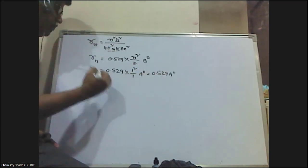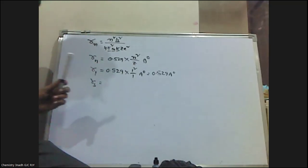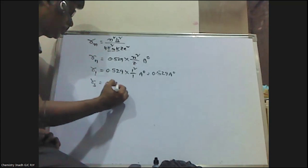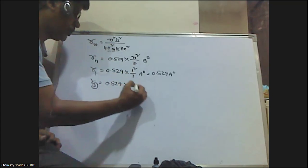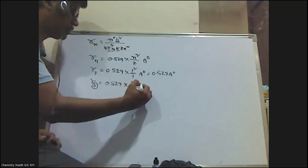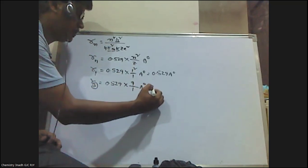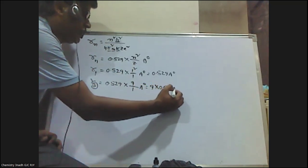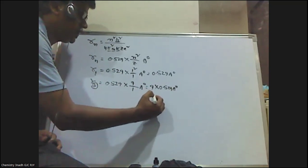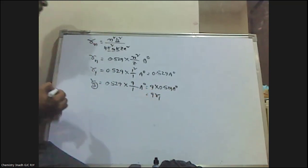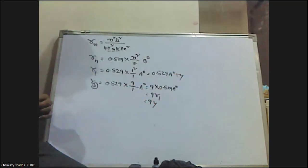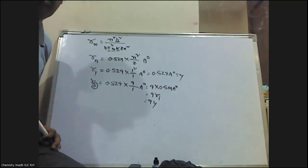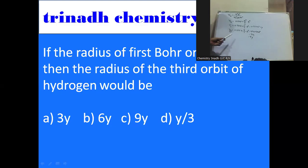For the third orbit, n = 3, and for hydrogen z = 1. So r3 = 0.529 × (3²/1) = 0.529 × 9. This is becoming 9 × r1. Since r1 is given as y, the answer will be 9y. Option C is the correct answer.